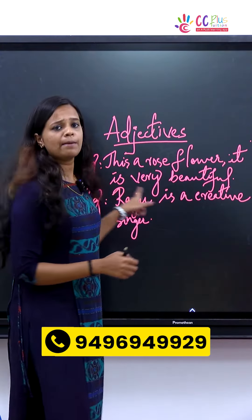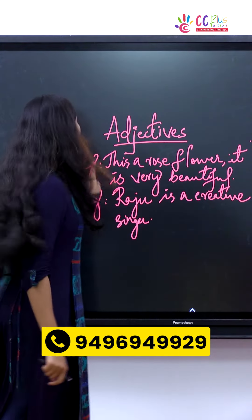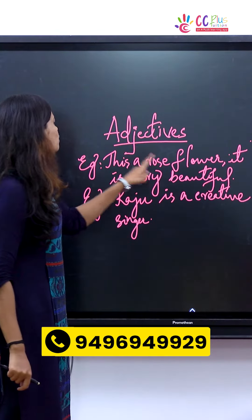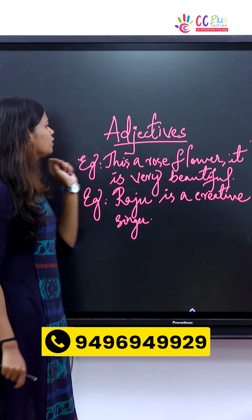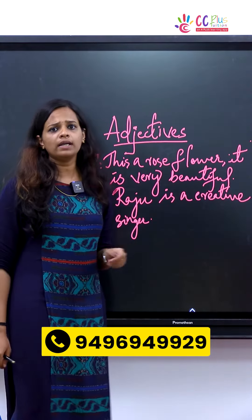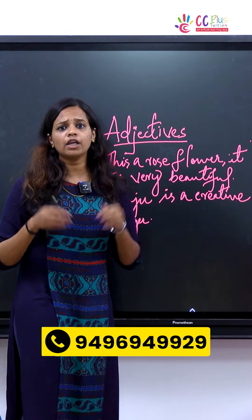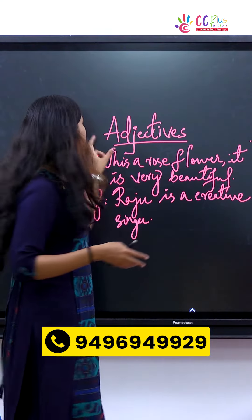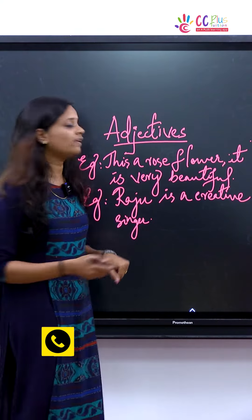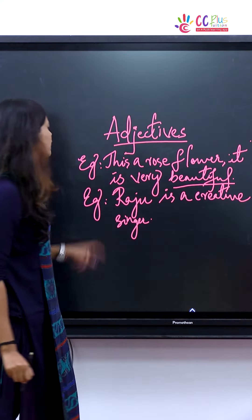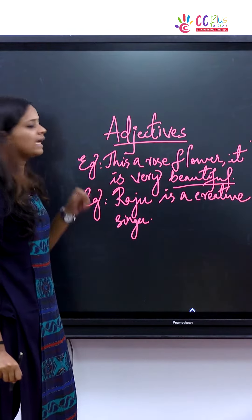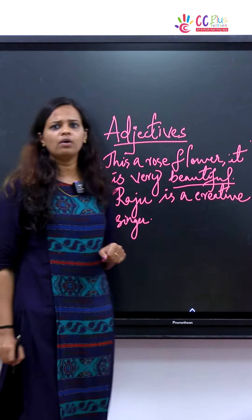Let's take an example. This is a rose flower — it is very beautiful. So 'beautiful' is an adjective, right? Another example: Raju is a creative singer.